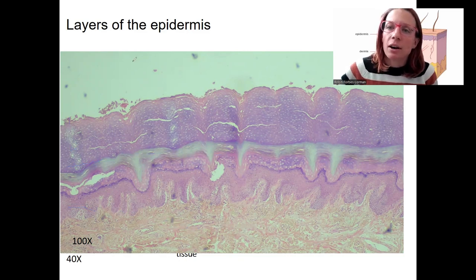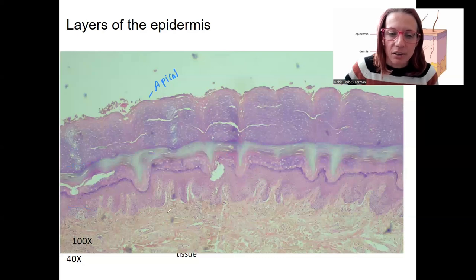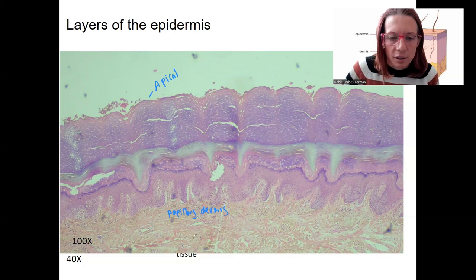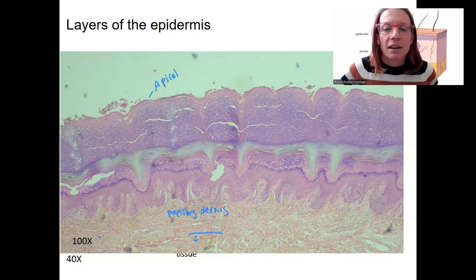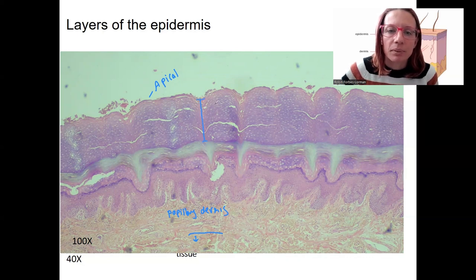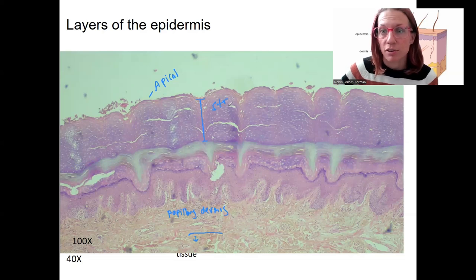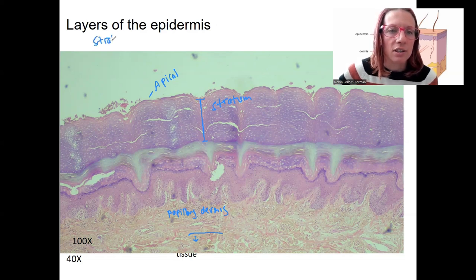Looking at the epidermis, I'm going to start at the top. This is the superficial side of the body — the apical surface of the epithelium. This is the basal side, and here is the papillary dermis down below. The top layer is the stratum corneum. "Strata" means layers — like stratification. Geologists talk about stratification of the earth; stratum is the singular, and these layers are called strata.